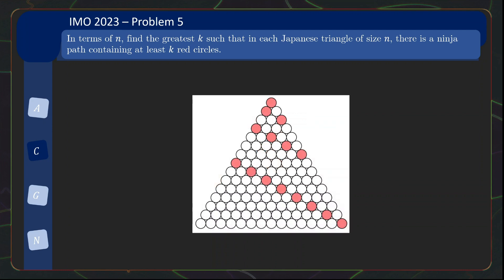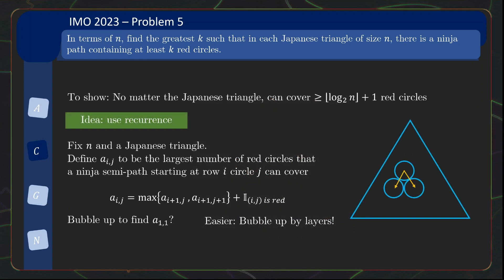The nice thing about the solution is that one direction of the solution can be easily motivated, whereas the other direction requires a cleverly defined quantity which the contestant must then attempt to bubble up to the top of the triangle.